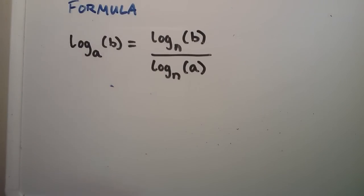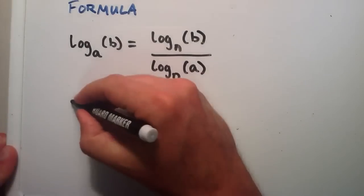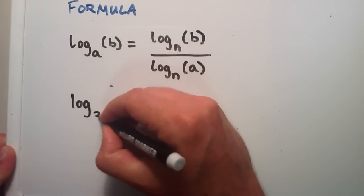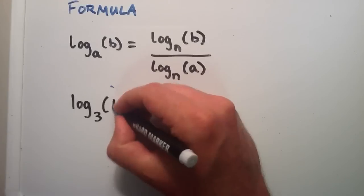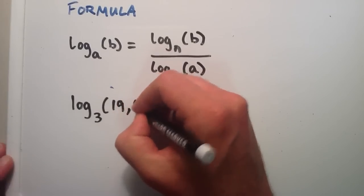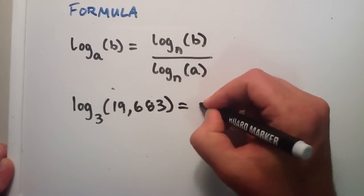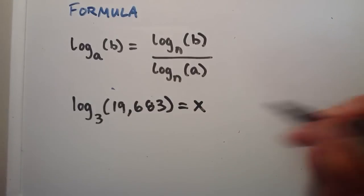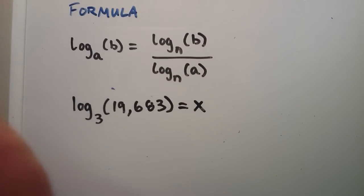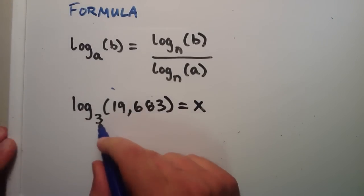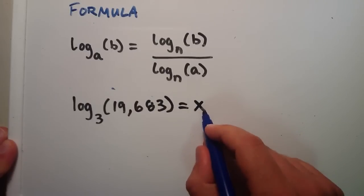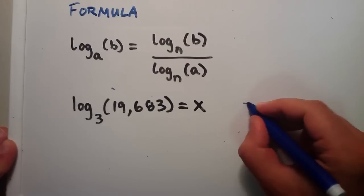Let's say that we have the log base 3 of 19,683 and that equals some number. So previously in my videos, the way that we would have solved this is we would have said, okay, 3 raised to the x power equals this number.